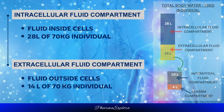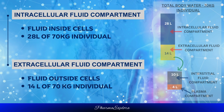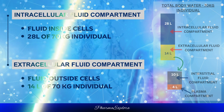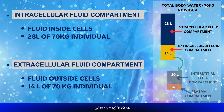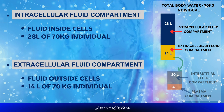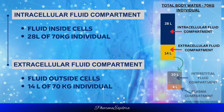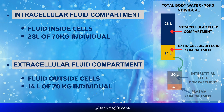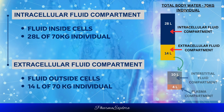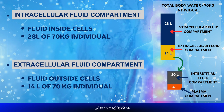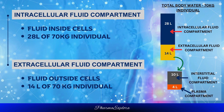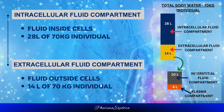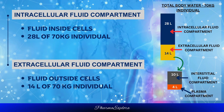The intracellular fluid compartment is the fluid inside cells, while the extracellular fluid compartment is the fluid outside cells. Total body water is considered to be 42 liters in a 70 kg individual. Out of this, the intracellular fluid compartment consists of 28 liters, whereas the extracellular compartment consists of 14 liters, further subdivided into plasma and interstitial fluid — 4 liters of plasma and 10 liters of interstitial fluid.